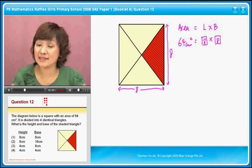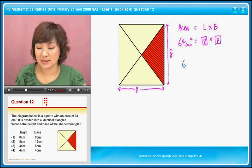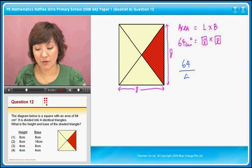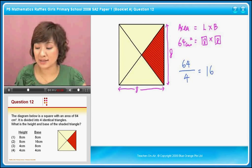Then you see that there are four identical triangles. Four identical triangles means each triangle is, what's the area of each triangle? It will be 64 divided by 4. Right. So that will give you 16. Correct. That will give you 16.